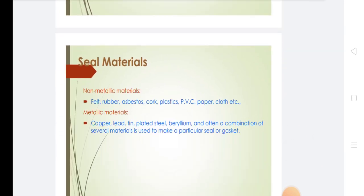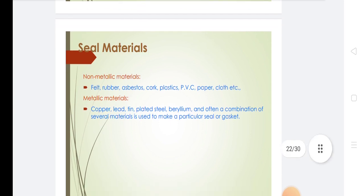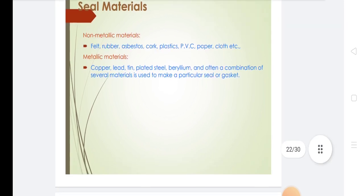Seal materials include non-metallic materials like felt, rubber, asbestos, cork, plastic, PVC, paper, and composites. Metallic materials include copper, lead, tin, plated steel, and beryllium. Often a combination of several materials is used to make a particular seal or gasket.